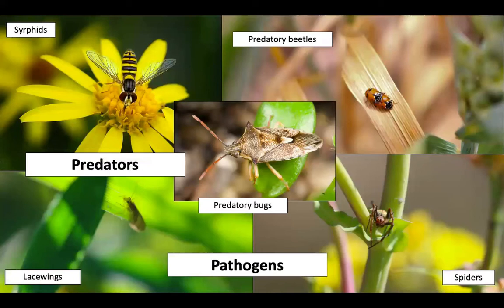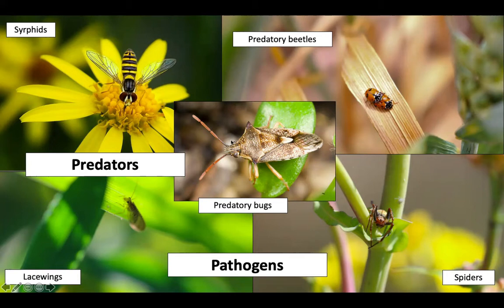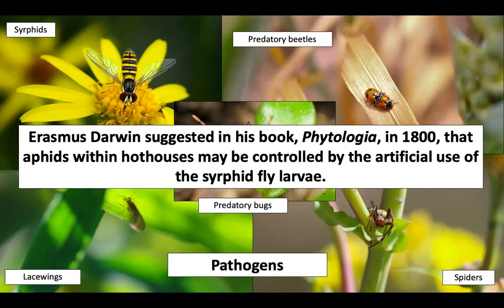I'm really interested in the biological controls, and in terms of aphids, pathogens can be used to control them, as well as predators. There are generalist predators such as predatory beetles like ladybirds and spiders, but also specialists such as predatory bugs, lacewings, and syrphids which are predatory flies. The use of these organisms is not new — in 1800, Erasmus Darwin, the grandfather of Charles Darwin, suggested that aphids within hothouses may be controlled by the artificial use of syrphid fly larvae.